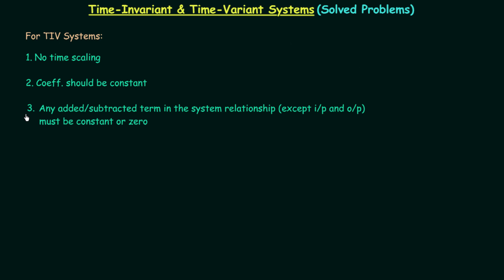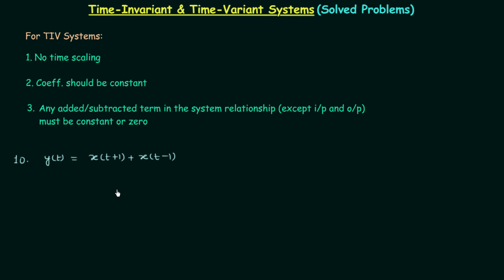You can directly use these 3 conditions to find out if the system is time invariant or time variant. Now we will start with the 10th problem. In the 10th problem, the output y(t) is equal to x(t+1) plus x(t-1). This is the system relationship and we are required to find out if the system is time invariant or time variant. So first we will check condition number 1.